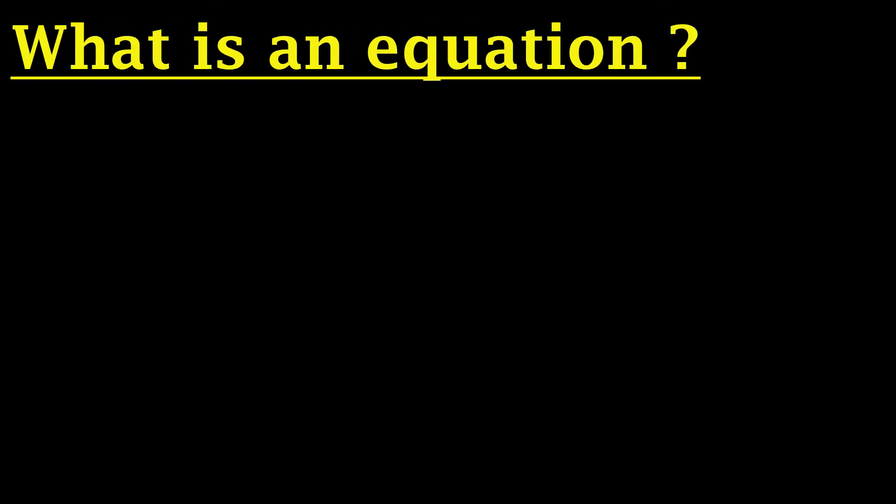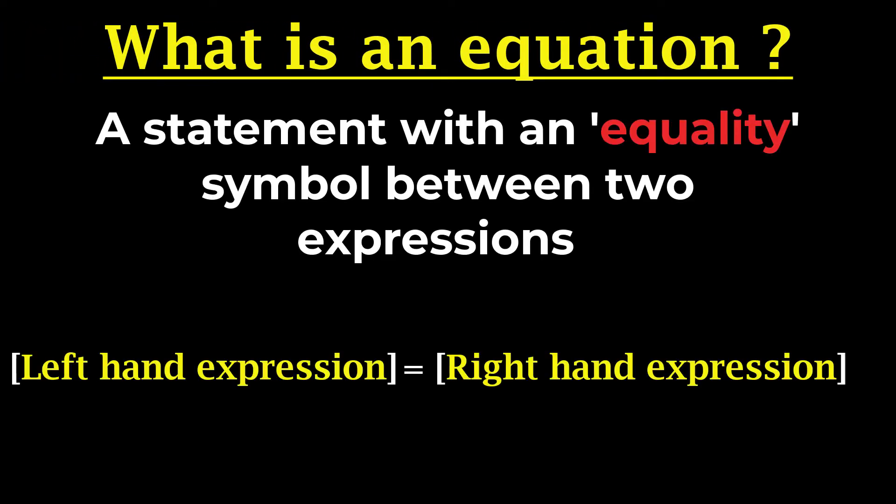First things first, an equation in mathematics is a statement with an equality sign between two expressions, one on the left hand side and one on the right hand side. What an equation means is that the two expressions are equal, as opposed to inequalities where one expression can be greater than or less than the other. So for example, this is an equation, but this is not an equation — it's just an expression because it doesn't have an equal sign. Now if you're watching this video, there is a high chance that you've worked with other types of equations before. So let's look at differential equations, what they are and how they differ from these other types of equations that you might have seen before.